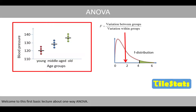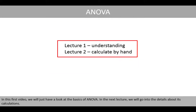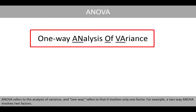Welcome to this first basic lecture about one-way ANOVA. In this first video, we'll just have a look at the basics of ANOVA. In the next lecture, we'll go into the details about its calculations. ANOVA refers to the analysis of variance, and one-way refers to that it involves only one factor. For example, a two-way ANOVA involves two factors.